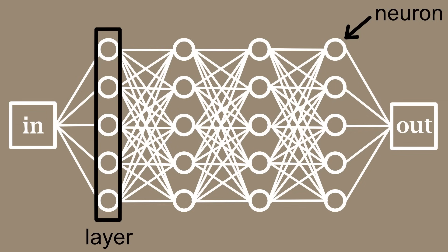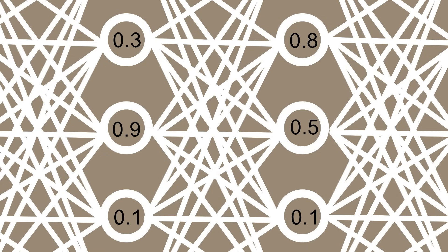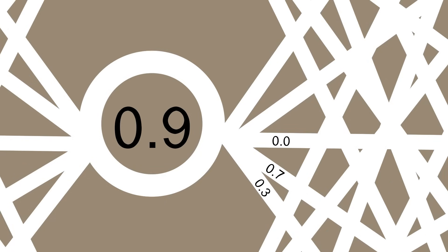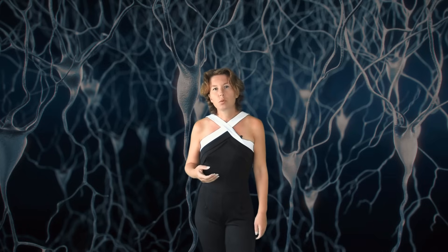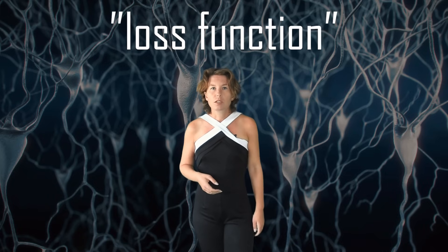In the neural net, the neurons are just numbers in the code — typically values between zero and one. The connections between the neurons also have numbers associated with them, called weights. These weights tell you how much the information from one layer matters for the next layer. The values of the neurons and the weights of the connections are essentially the parameters of the network. By training the network, you want to find those values of the parameters that minimize the loss function. So really, it's an optimization problem that neural nets solve.